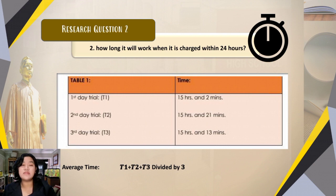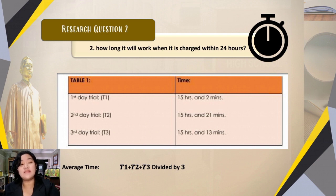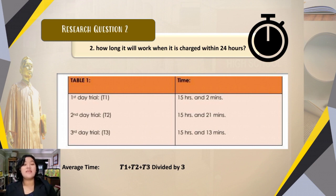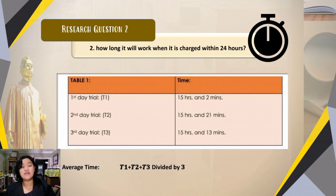The outcomes are fairly close to the estimate. After calculating the total time of all trials and dividing by the number of trials, the result is displayed using a mean calculation. The total average operating time is 15 hours and 12 minutes.